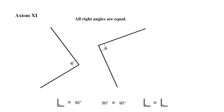Axiom 11: All right angles are equal. A right angle equals 90 degrees, and 90 degrees equals 90 degrees, so that would mean that a right angle equals a right angle.